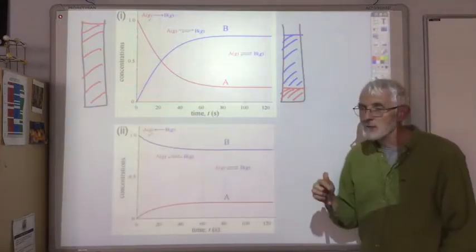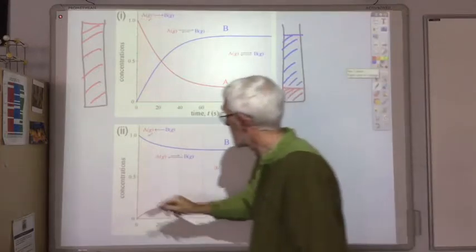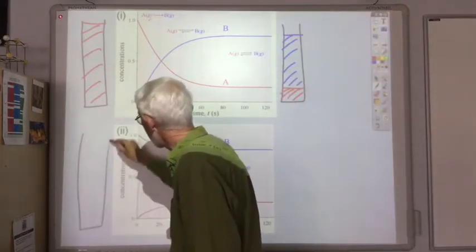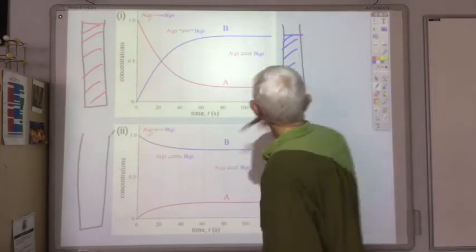Now, let's assume that we start, it's the same reaction, but we start from a different place. So instead of having the beaker full up with A, we have it full up with B.